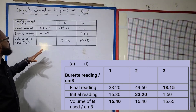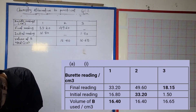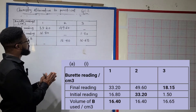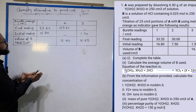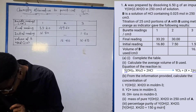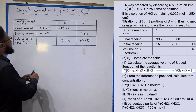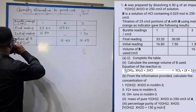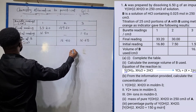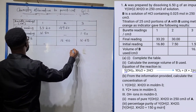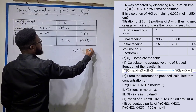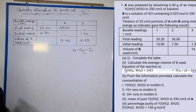We have a table for this question on the board. This is actually a reaction between an impure solid which is hydrated and an HCl solution. What we are told to do in this probable question is to copy and complete the table. The final burette volume of acid used is final reading take away initial reading.